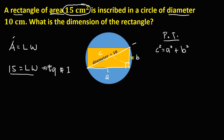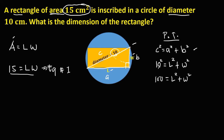Substituting the values into the formula: since c is 10, c squared is 10 squared, which equals l squared plus w squared. Simplifying, 10 squared is 100, so we get 100 equals l squared plus w squared. This is equation number two.